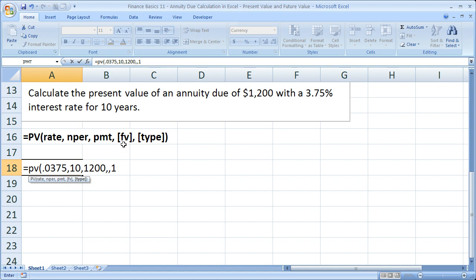So putting the one tells it that payments come at the beginning of the period. Close the parentheses. Go ahead and make it a positive number by putting a negative sign here, and hit enter.